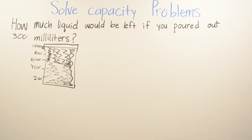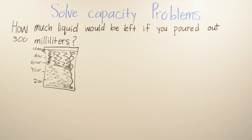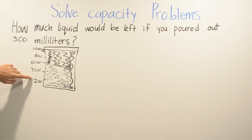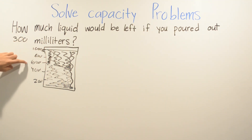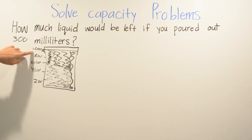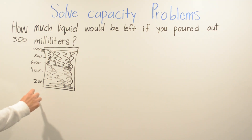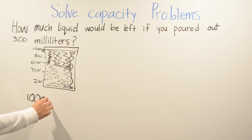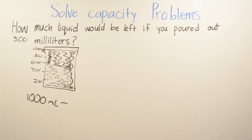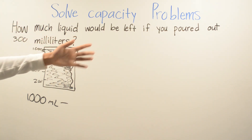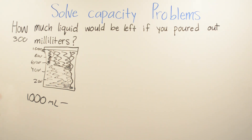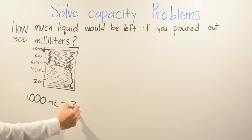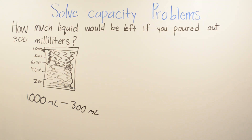For this problem, we have to find how much liquid would be left if you poured out 300 milliliters. We have to subtract 300 milliliters from our number. Is it 200? No. 400? Keeps on going. 600? No. 800? No. Can it be 1,000? Yes, because it stops right there. So the number is 1,000 milliliters. We're going to subtract because poured out means take out: 1,000 minus 300.